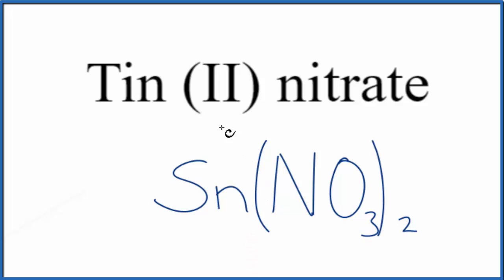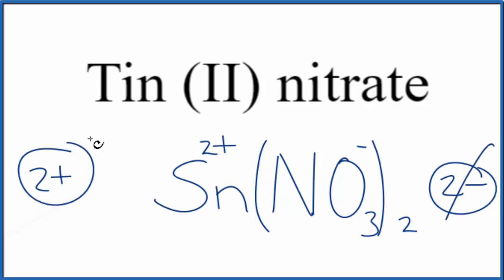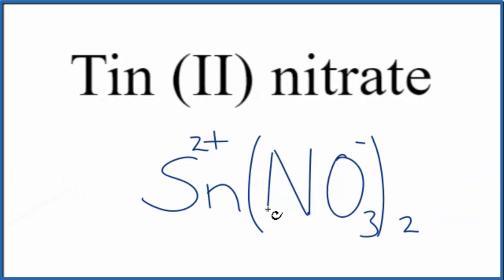Let's check our work. We said the Tin had the 2 plus, and we know that the nitrate, the whole thing, 1 minus. So 2 times the 1 minus, that's 2 minus, and then we have the 2 plus over here. 2 plus, 2 minus, that adds up to a net charge of zero. So this is the formula for Tin (II) nitrate.